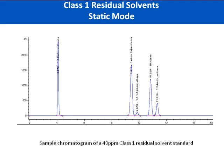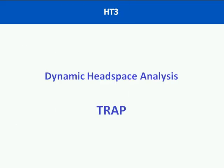To give you an idea of what the chromatography looks like in the static mode, here is a sample for a 40 ppm class 1 residual solvent standard. Here we've used the loop mode, and you can clearly see 1,1-dichloroethylene, 1,1-trichloroethane, carbon tetrachloride, benzene, and 1,2-dichloroethane. We've indicated good chromatographic results and nice peak shape and response using the HT3 in the static mode. Remember, in the static mode you're going to get the higher concentrations at 40 ppm, while later we're going to show increased sensitivity with the dynamic mode, where we're going to be looking at PPB levels.